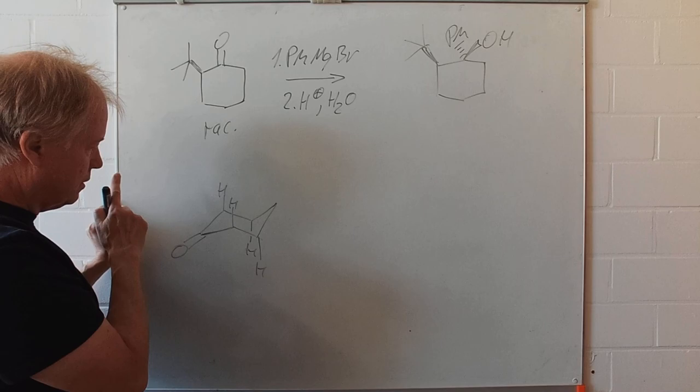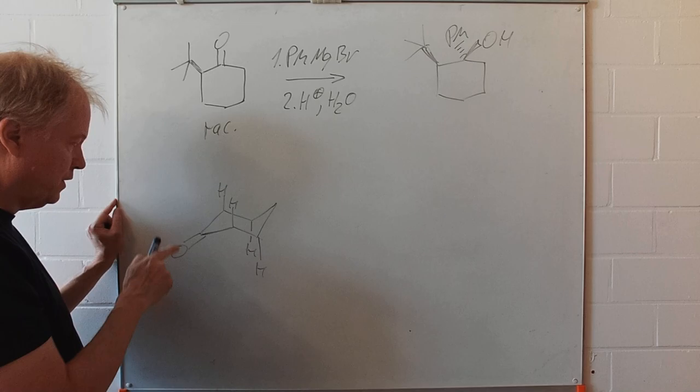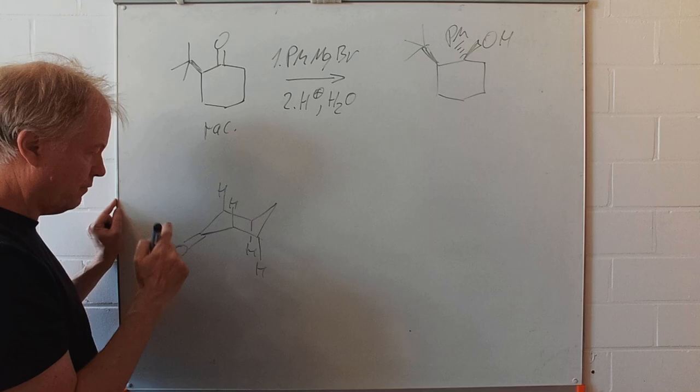From the geometrical point of view the attack should proceed perpendicular, that means in an angle of 90 degrees to the double bond.